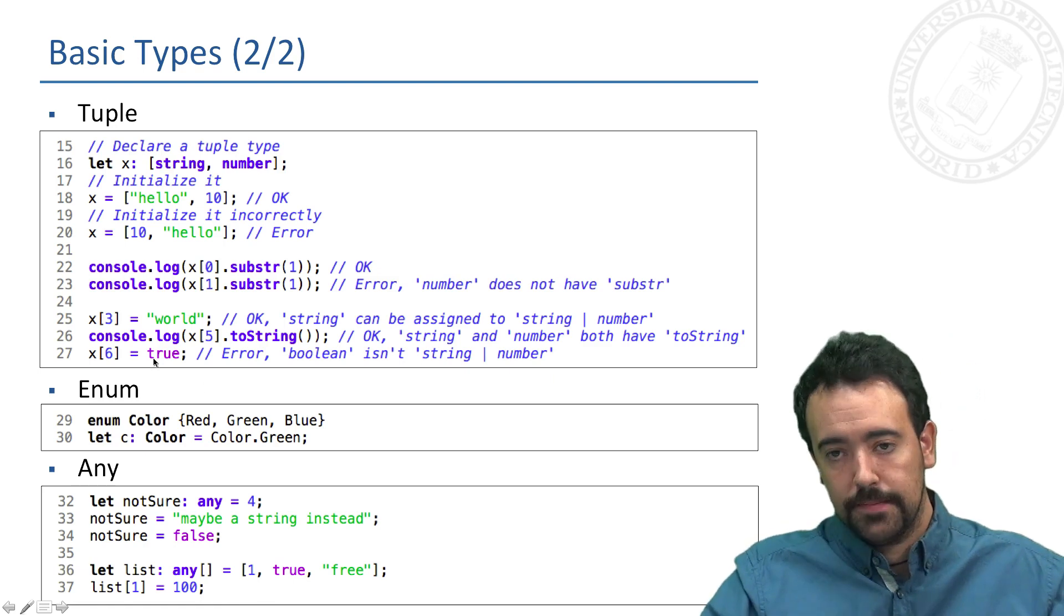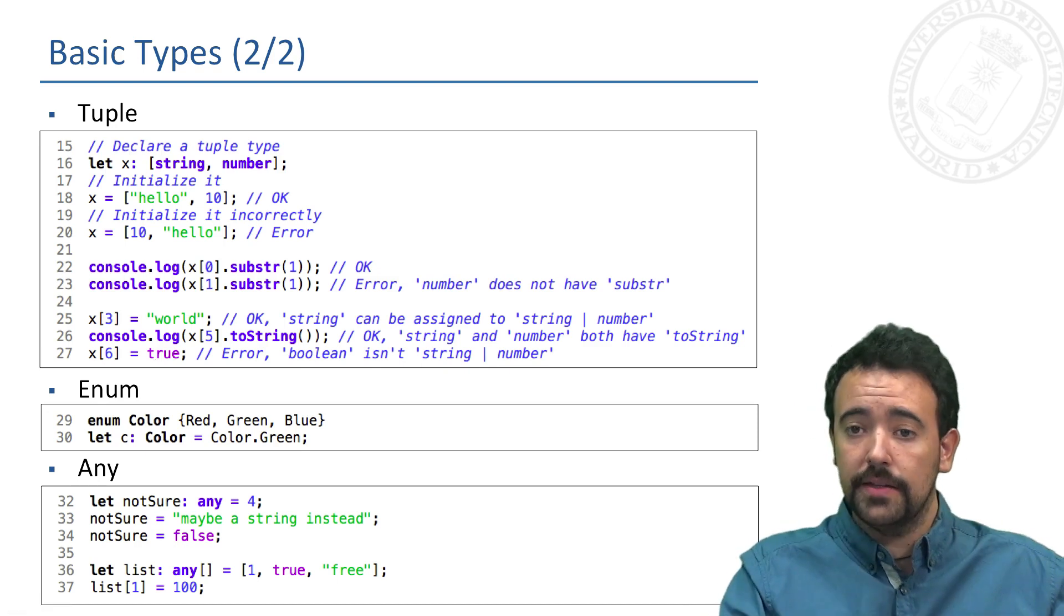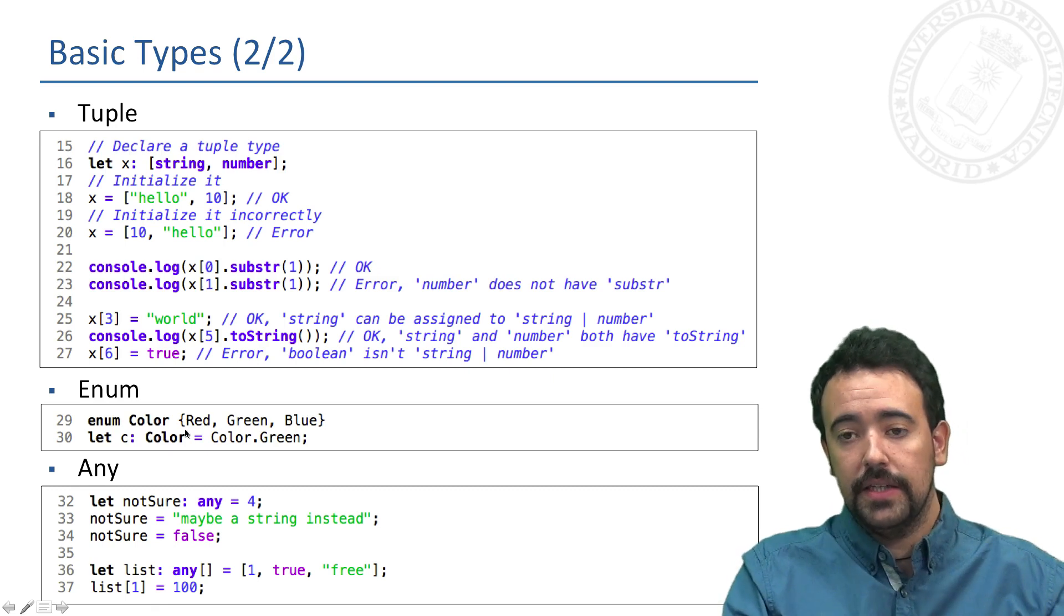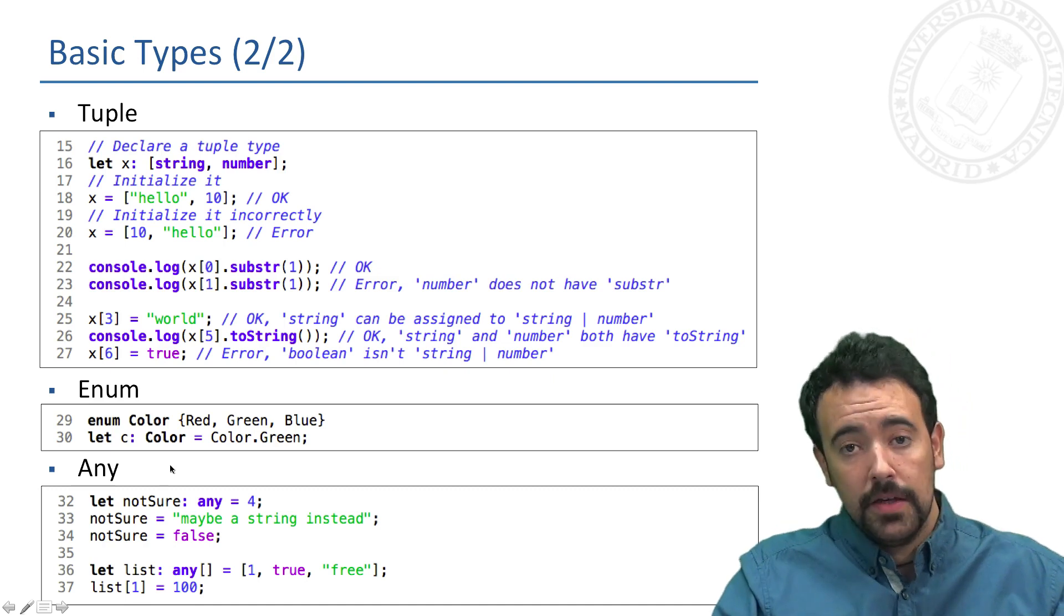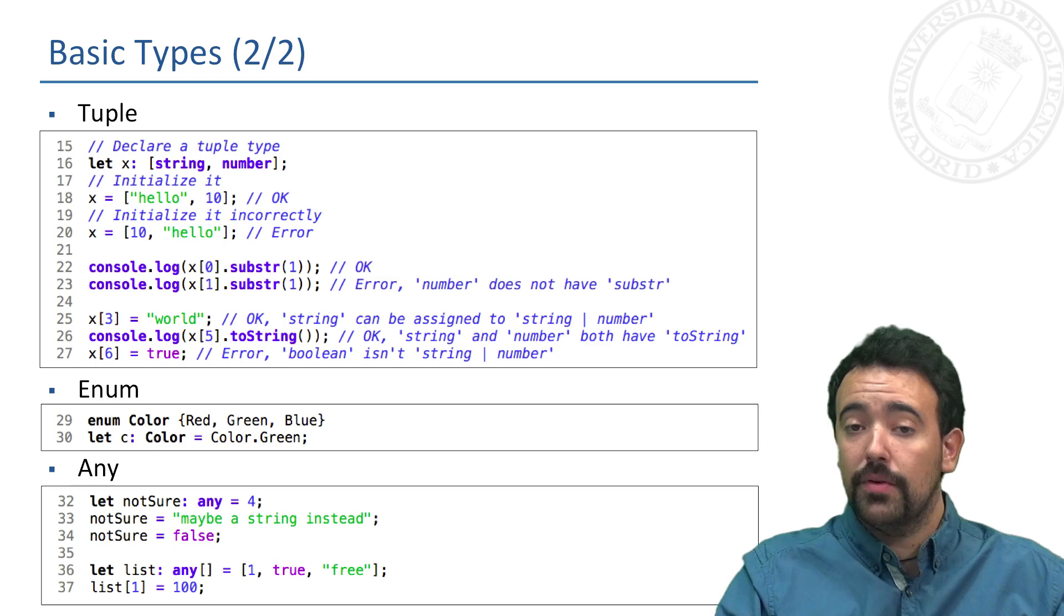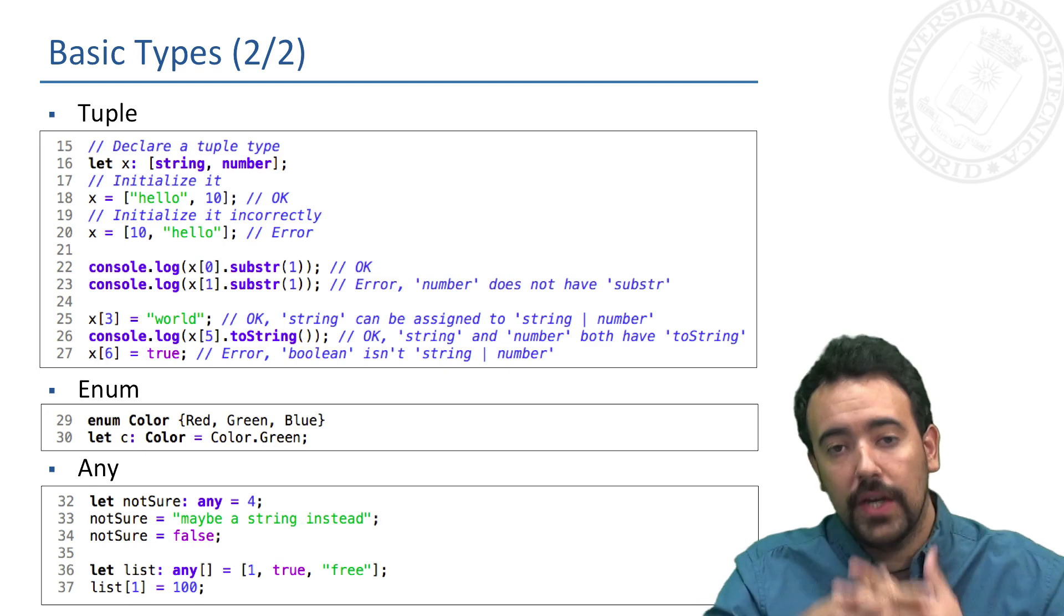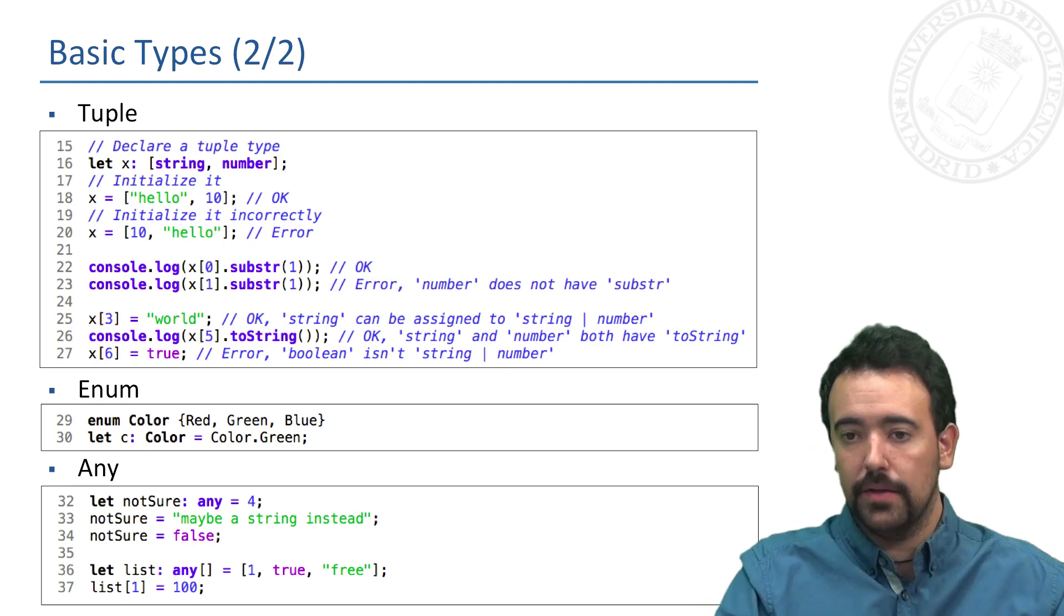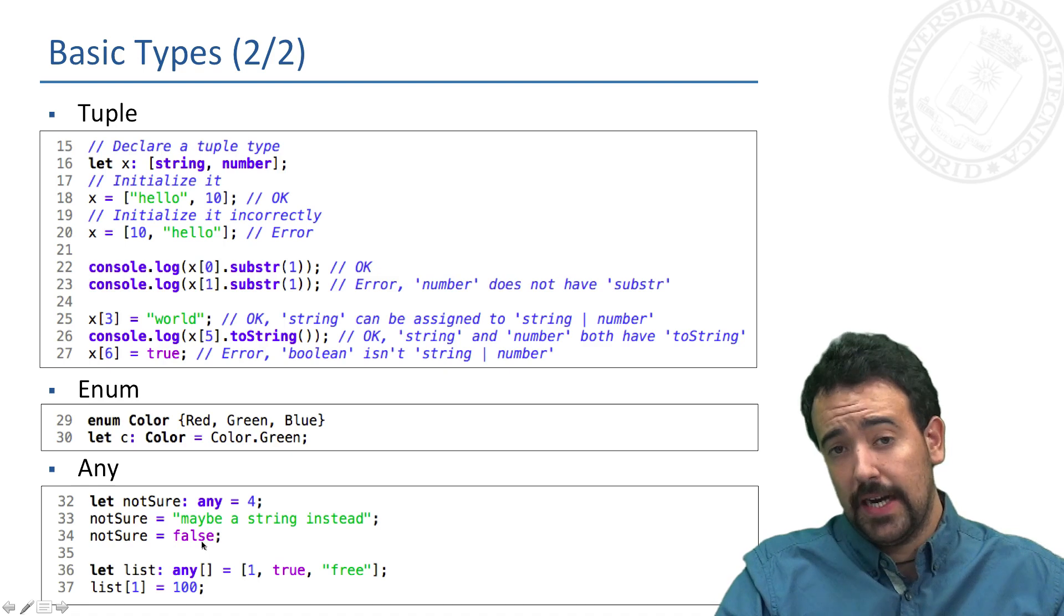We can also use enumerations in TypeScript, as you can see here in this example. We can use the type 'any' if we are not sure the type of the value or of the var we are defining, and we want to admit any type of value. You can see here that in this example, 'notSure' is of any and we can include here a number, we can include a string, also a boolean.